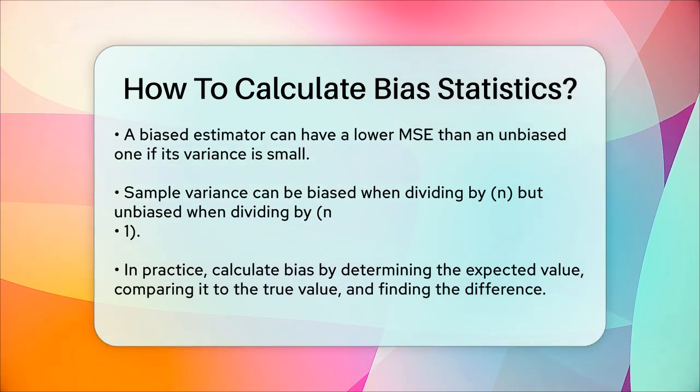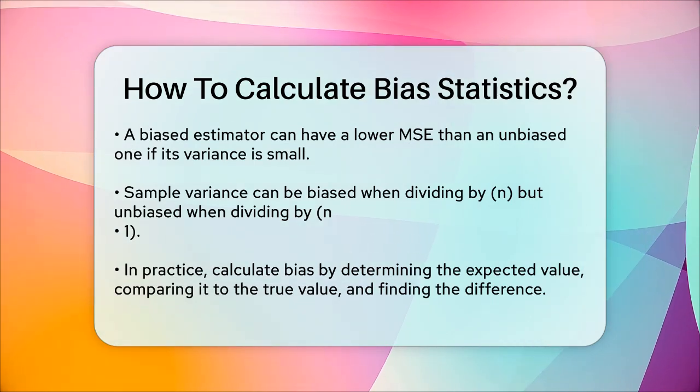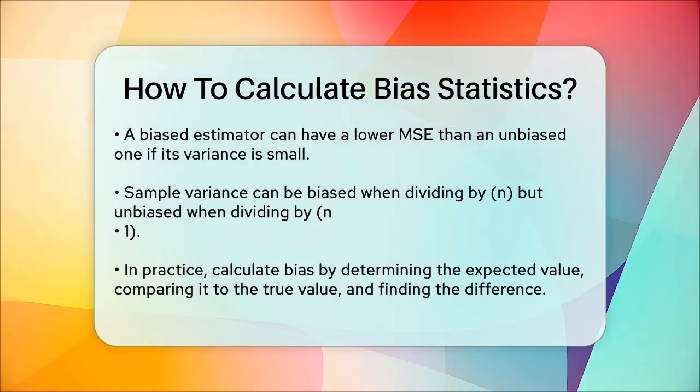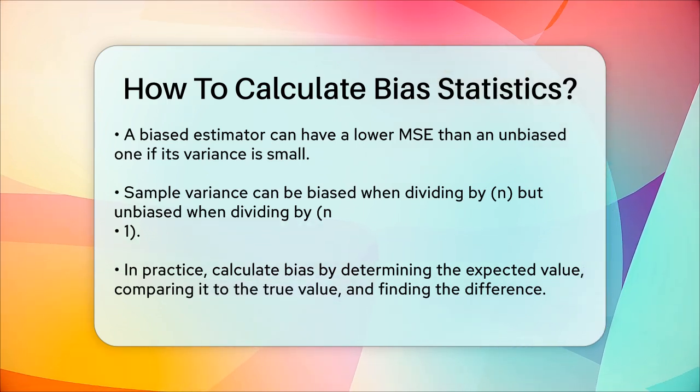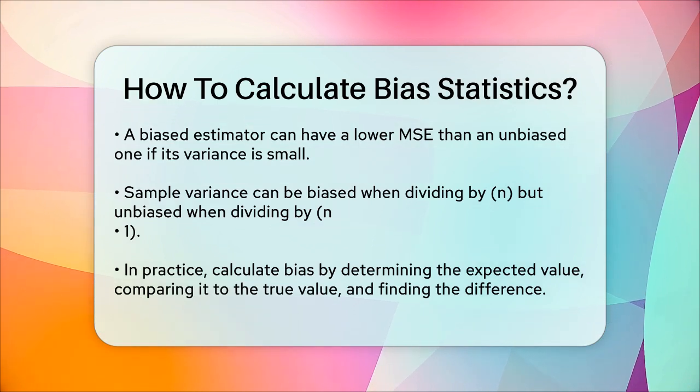In practical terms, to calculate bias, you need to determine the expected value of your estimator based on your sample data. Compare this expected value to the true value of the parameter. Calculate the difference between these two values to find the bias.